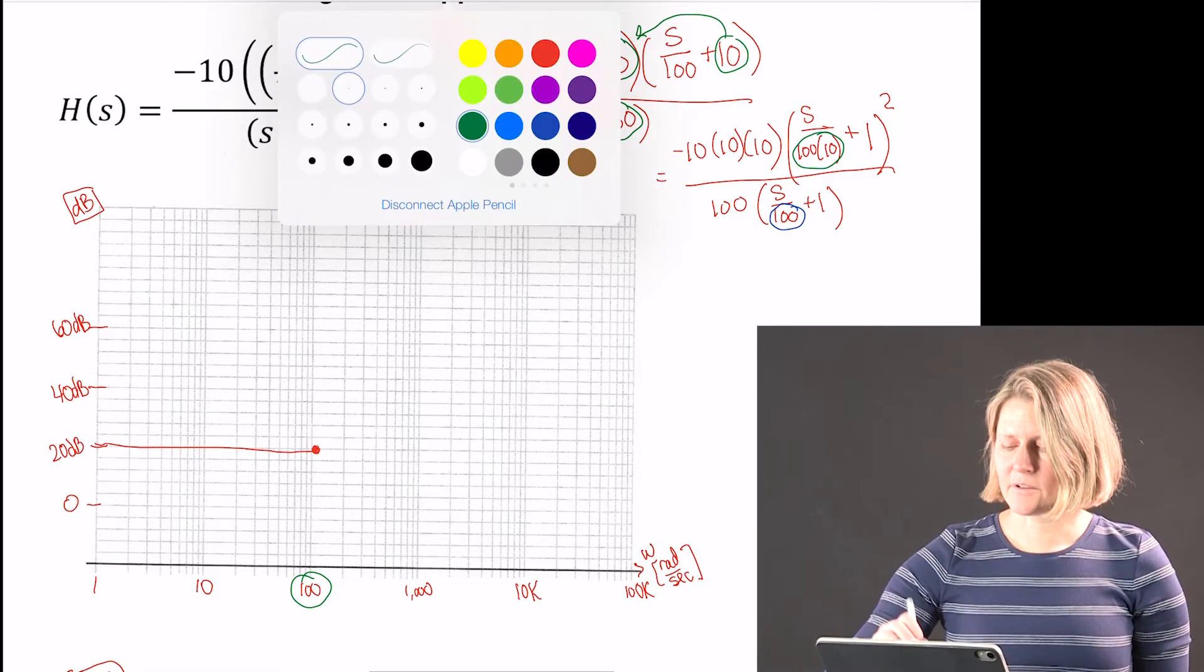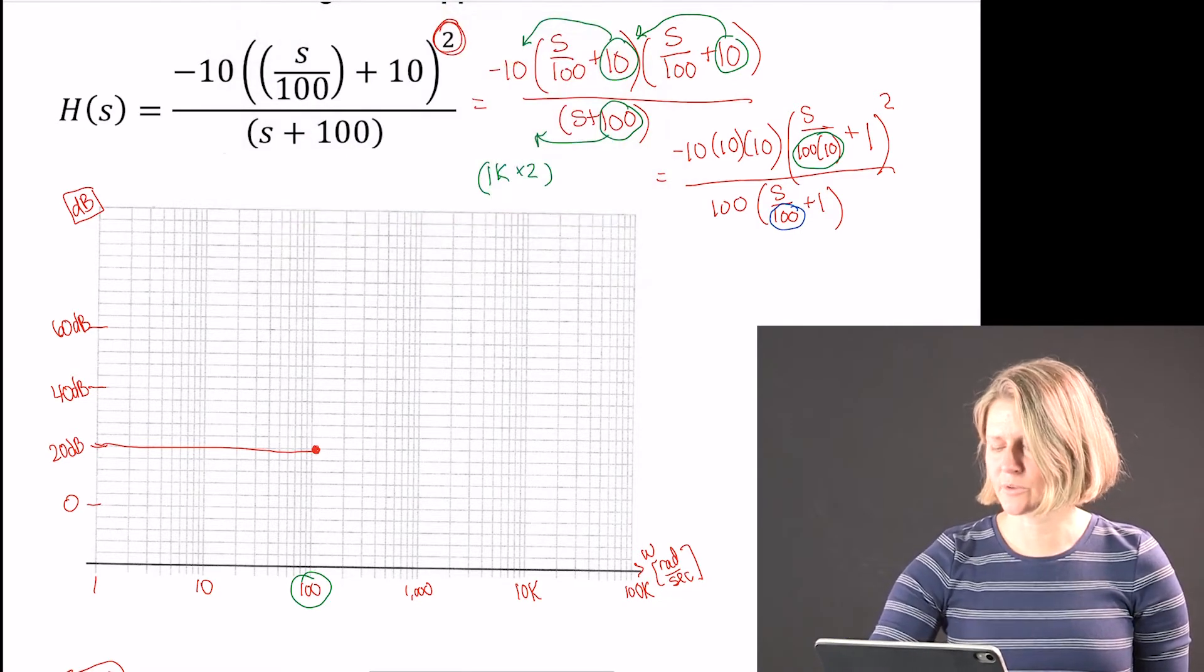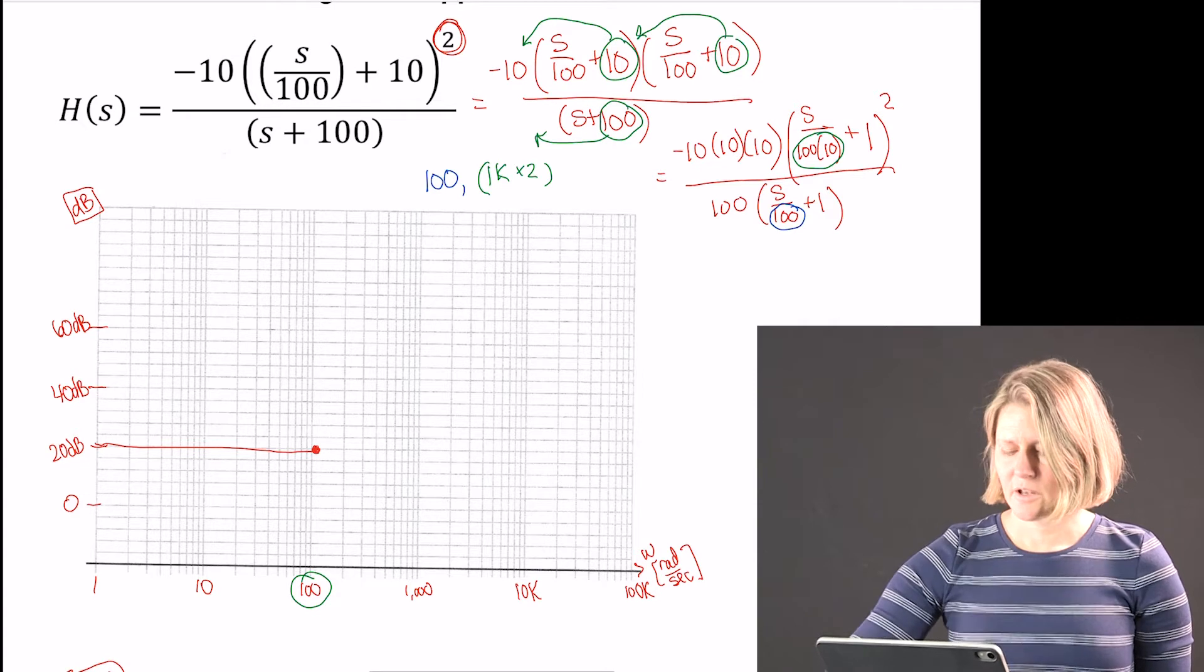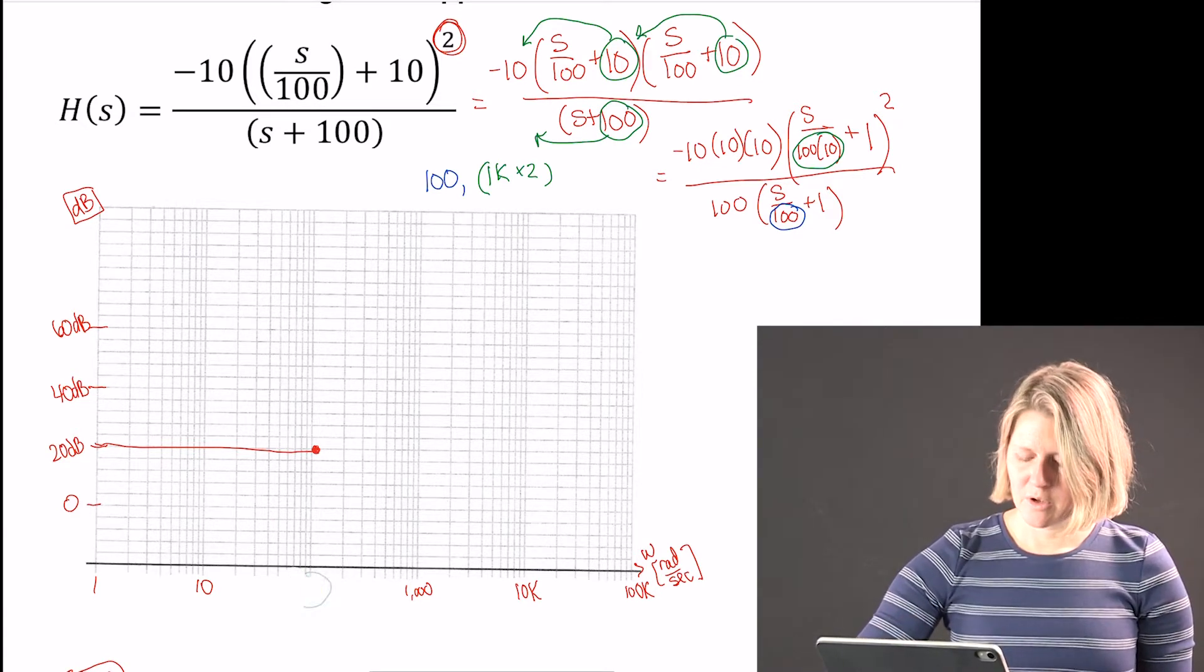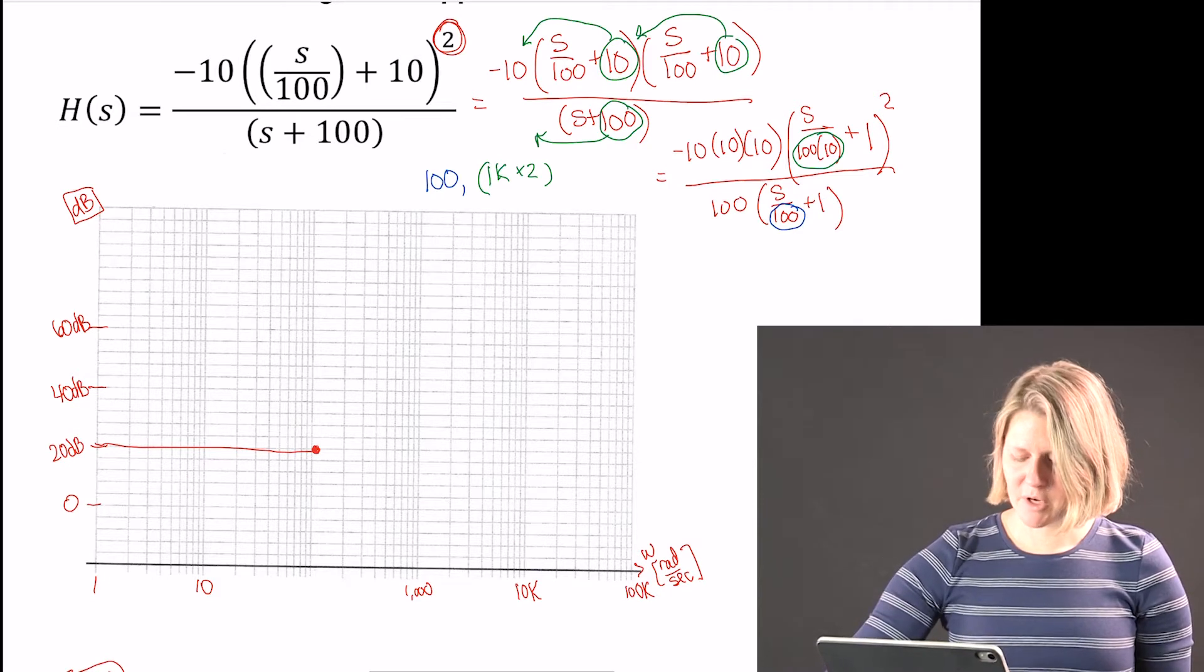At 1k I have two zeros and then 100 is my pole. So I'm going to mark these.